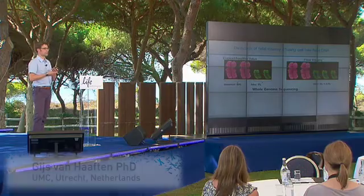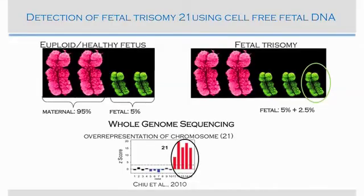This sounds easy but is quite a challenge, because the fraction of fetal DNA is only about 5% in the blood — ranging with the week of gestation, increasing up to 20% sometimes. So we have roughly 95% maternal DNA and only 5% fetal DNA, and we want to measure any increase in chromosomal representation. We do this using whole genome sequencing at very low coverage.